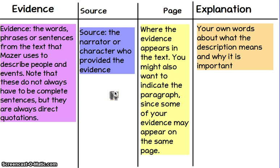In the source column, we're going to write where this information is coming from — specifically the character it's referring to. If it is the narrator, since Tuesdays of the Other June is a first-person narration, the narrator would be June. Or if it's a description of her mother or the other June, we write that in the second column. In the third column, we're going to put the page number where the evidence appears in the text. And if you know which paragraph it comes from — since we're using our codex workbooks and the paragraphs are numbered — it's always a good idea to include the specific paragraph number, especially if evidence appears on the same page, to differentiate where it is located.